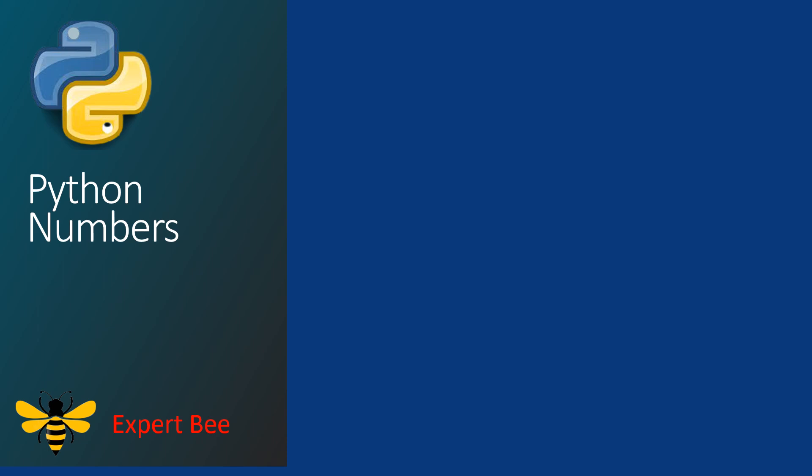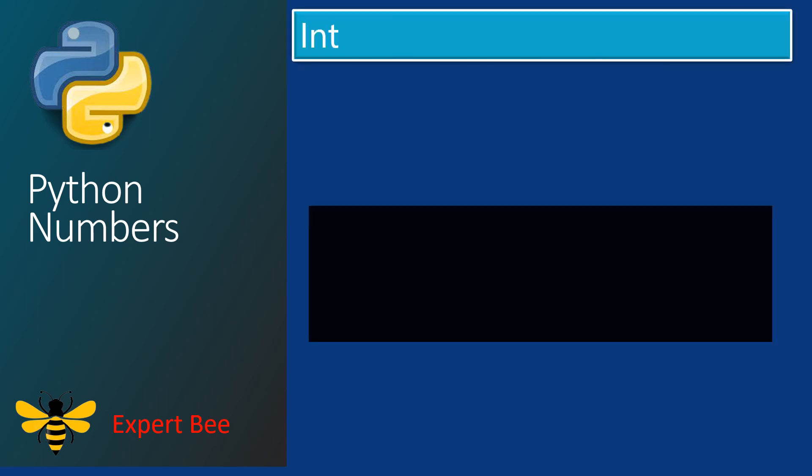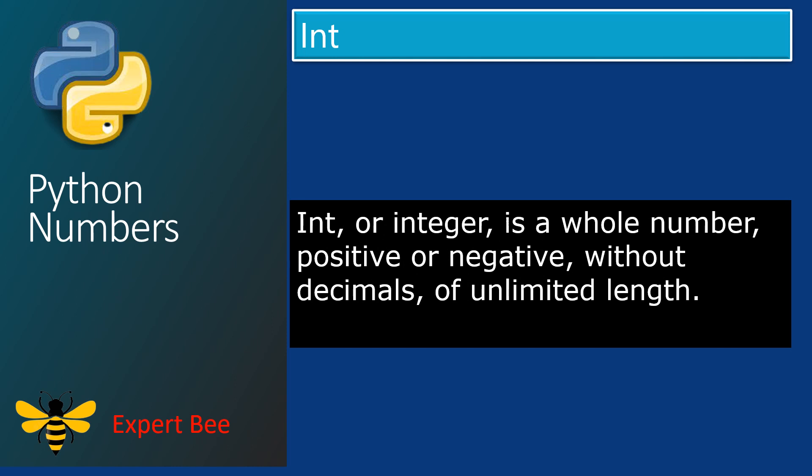Now let us look at the integer data type. Int or integer is a whole number, positive or negative, without decimals, of unlimited length. It means that it should contain a positive or negative number without decimals, and it can be of any digit length — one digit, two digit, three digit, or any digit length.